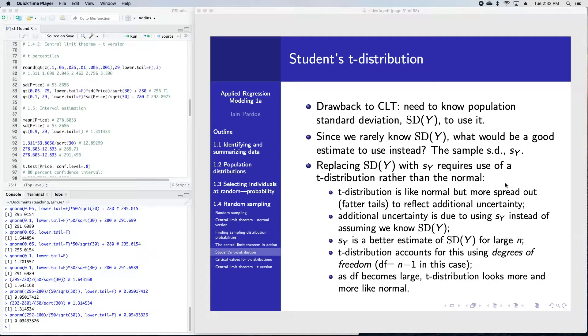What happens then is that instead of having a normal distribution for the sampling distribution of the sample mean, we end up with a t-distribution. The t-distribution is very like the normal distribution. It has that same kind of bell shape, but it's a little more spread out. One way that's described is it has fatter tails.